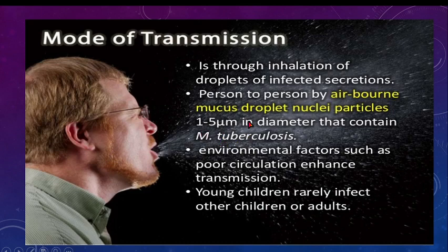One micron is 1/1000th of a millimeter — so 1 to 5 micrometers is an extremely small size, invisible to the naked eye. Despite being so tiny, these droplet nuclei can contain Mycobacterium tuberculosis. Children suffer from this disease due to these airborne mucous droplet nuclei.